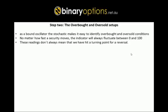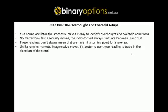But if we are in a very aggressive move to the upside or downside, overbought and oversold conditions don't always mean we have hit a turning point and are due for a reversal. Unlike ranging markets, in aggressive moves it's better to use these readings to trade in the direction of the trend. Overbought conditions at the top of the range give us signals to buy puts, and oversold conditions at the bottom give us signals to buy calls. We're going to see how to use these setups to trade in the direction of the trend.